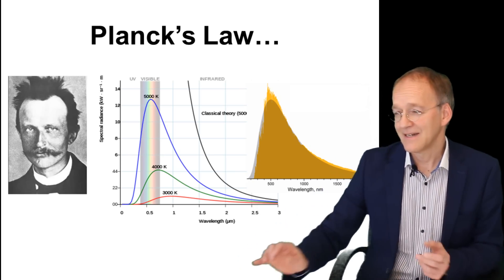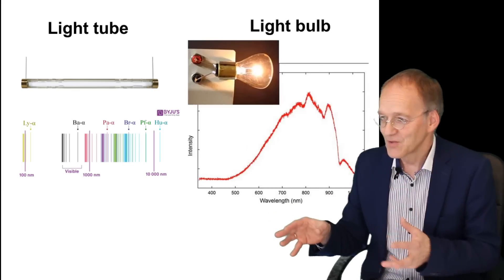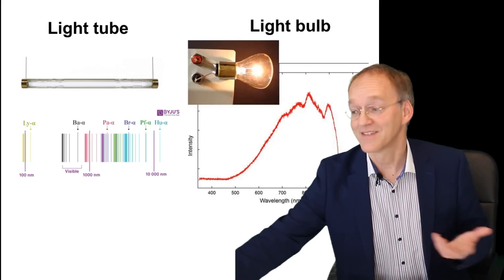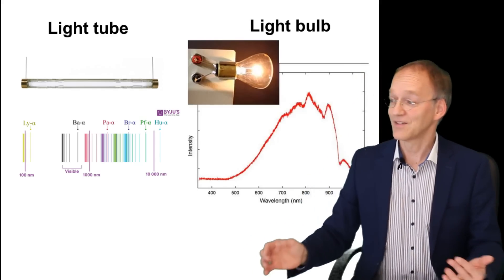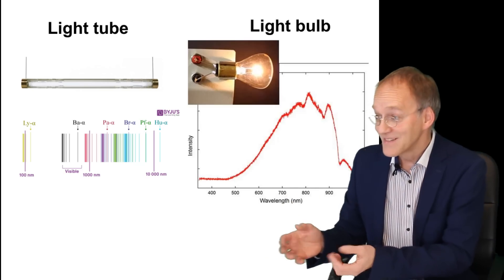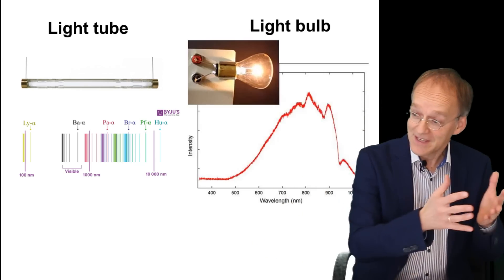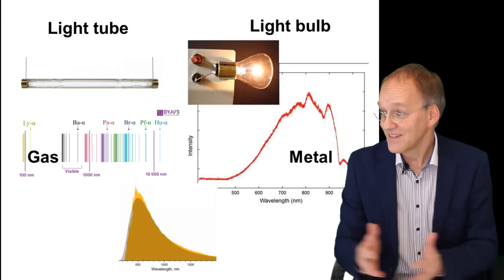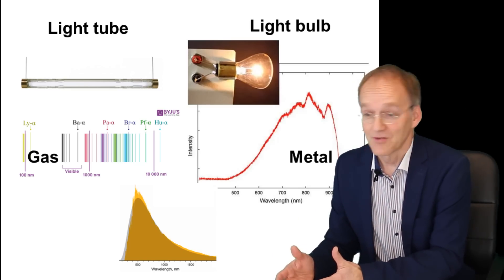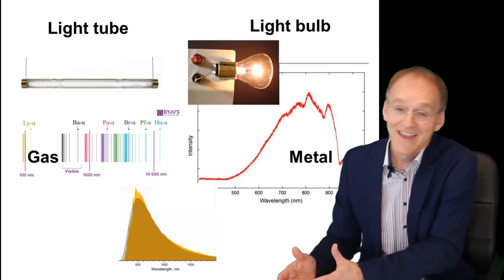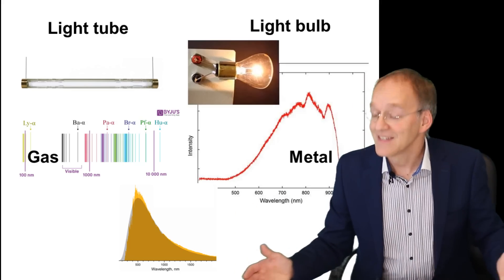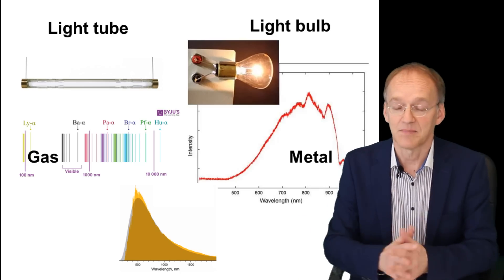Now to boil this down to a very simple message: you have the light of a light tube and it's discrete, and you have the light of a light bulb and it's continuous. One thing is a gas—a light tube is filled with gas—and inside the light bulb there is a metal, there is tungsten. And guess what? Which spectrum is more similar to the Sun? It's clear that the Sun must be condensed matter.